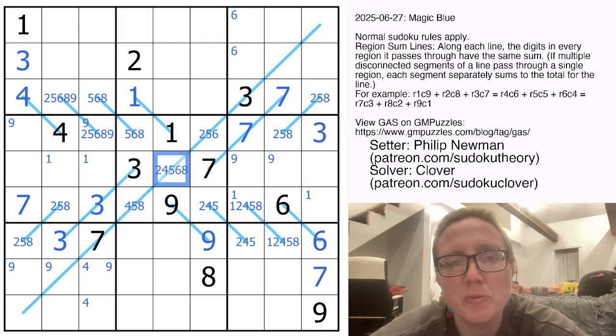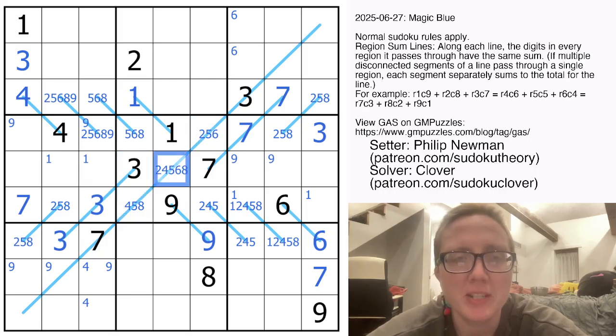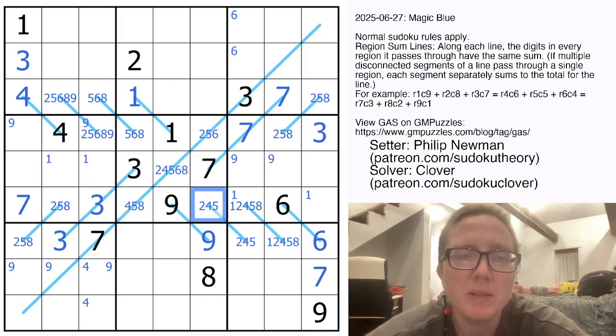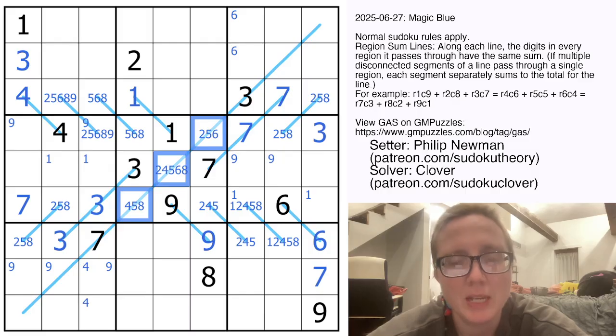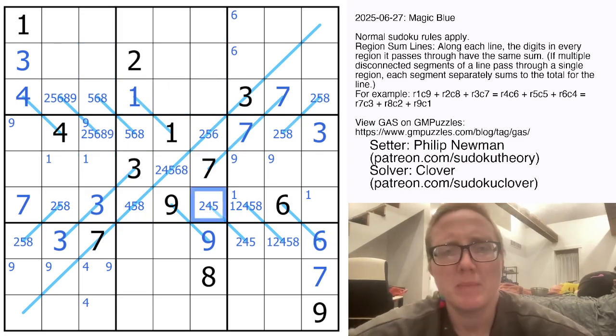Maybe there's something that we can do with the sum of the long region sum line. So the minimum possible value we could have along this line, the three lowest digits are 2, 4, and 5. But we can't just make this 2 plus 4 plus 5 because that would break this cell. So the minimum we could make this would be 2, 4, and 6, which is 12. So the minimum here is 12. That's not incredibly helpful. The maximum is 4, 6, and 8, which is 18. So we're somewhere between 12 and 18. Interesting. Oh, okay. I'm on to something now.